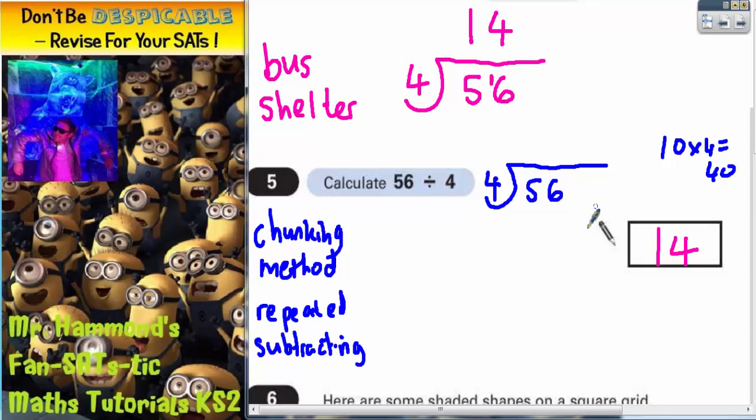So if we subtract 10 4s from 56, always write at the side what you're subtracting. So 10 4s are 40, so let's subtract that. 6 take away 0 is 6, 5 take away 4 is 1, so we're left with 16.